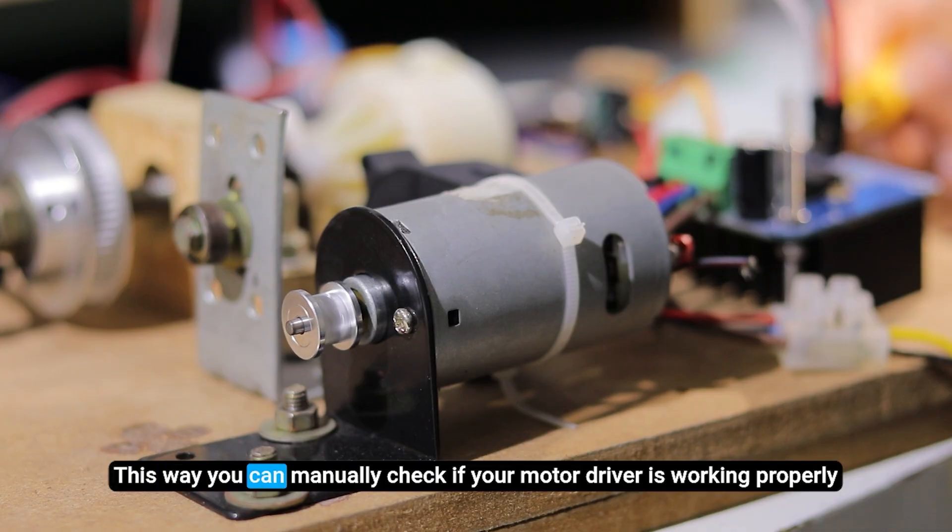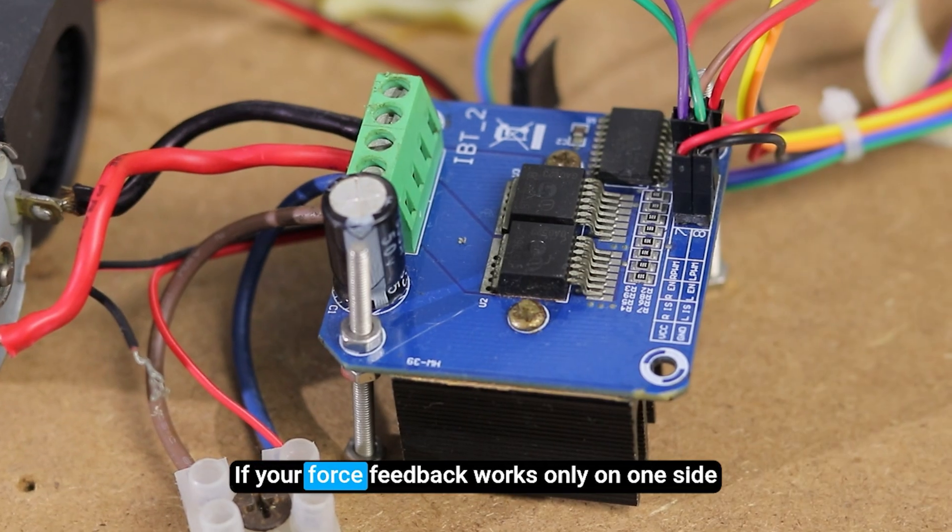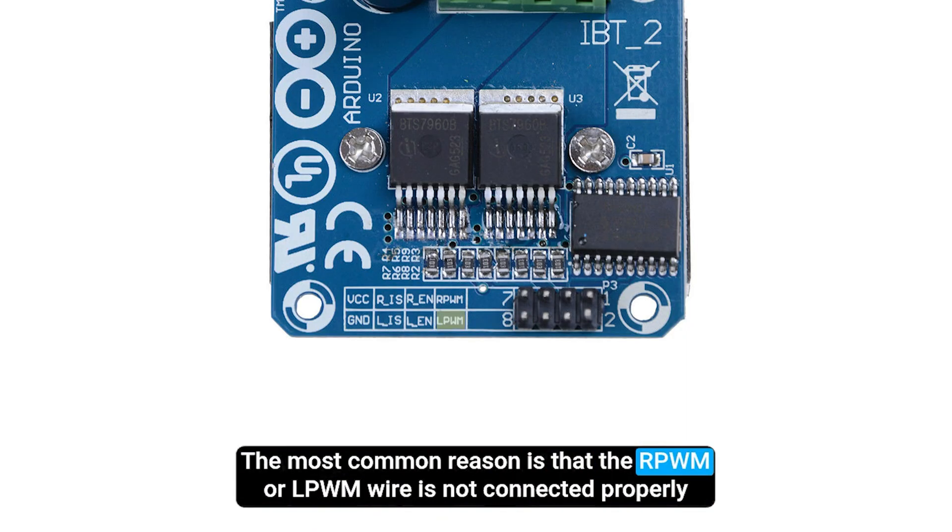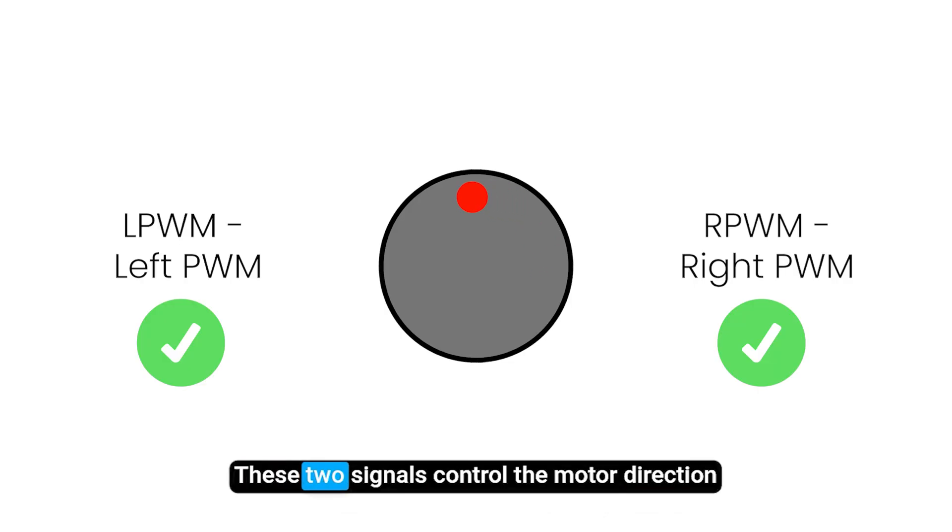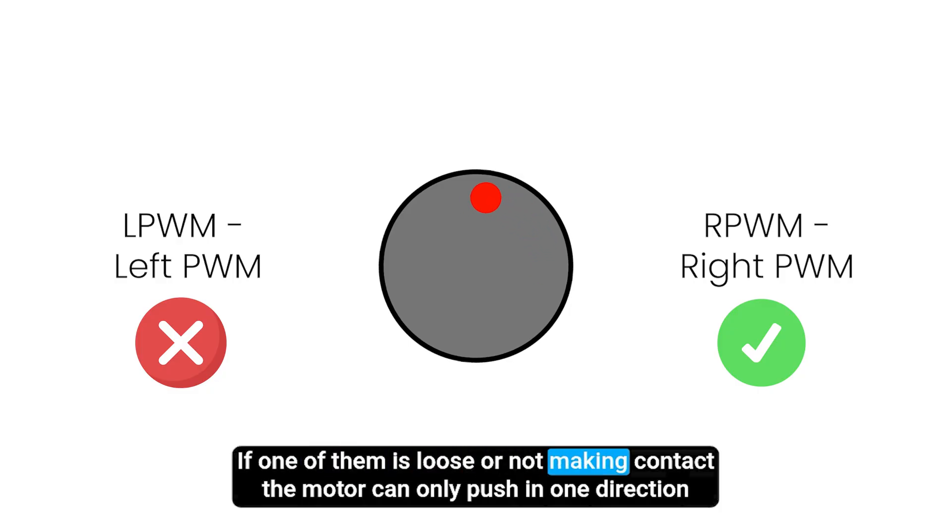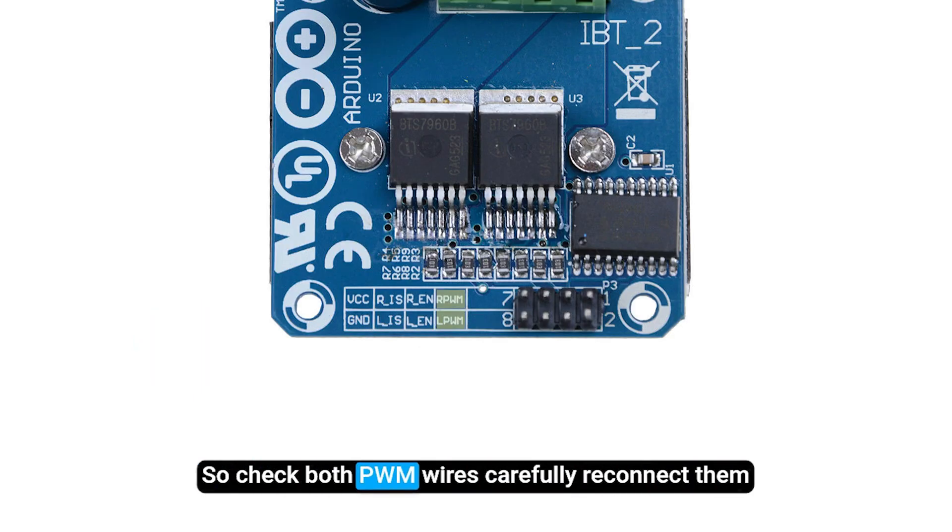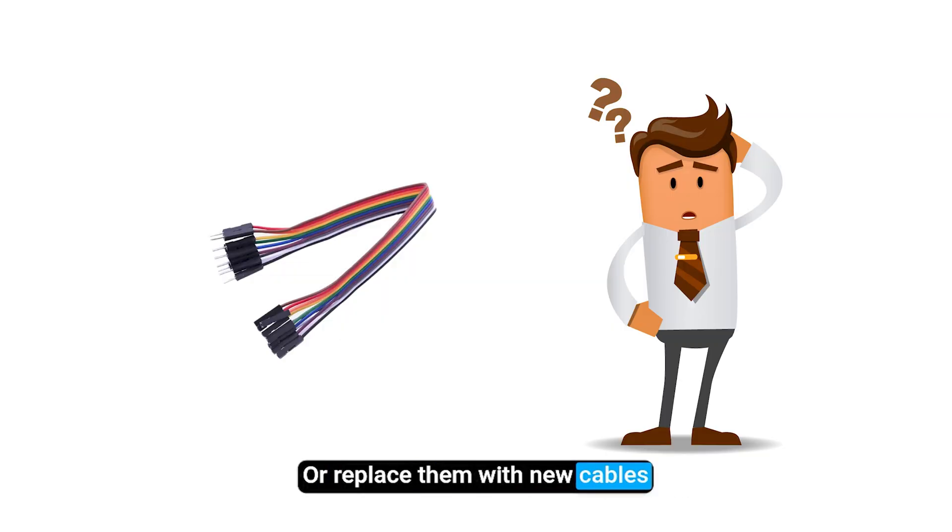This way, you can manually check if your motor driver is working properly. If your force feedback works only on one side, the most common reason is that the RPWM or LPWM wire is not connected properly. These two signals control the motor direction. If one of them is loose or not making contact, the motor can only push in one direction, so the feedback feels like it works only on one side. So check both PWM wires carefully. Reconnect them, or replace them with new cables if you are not sure.